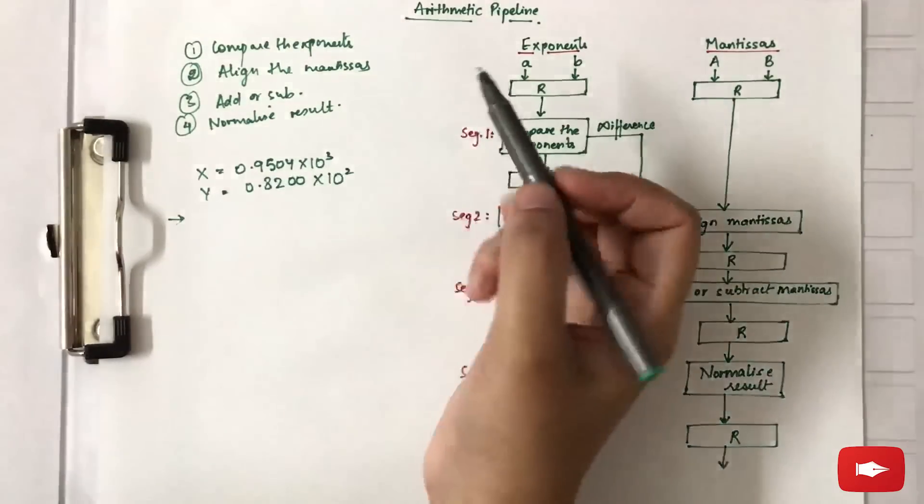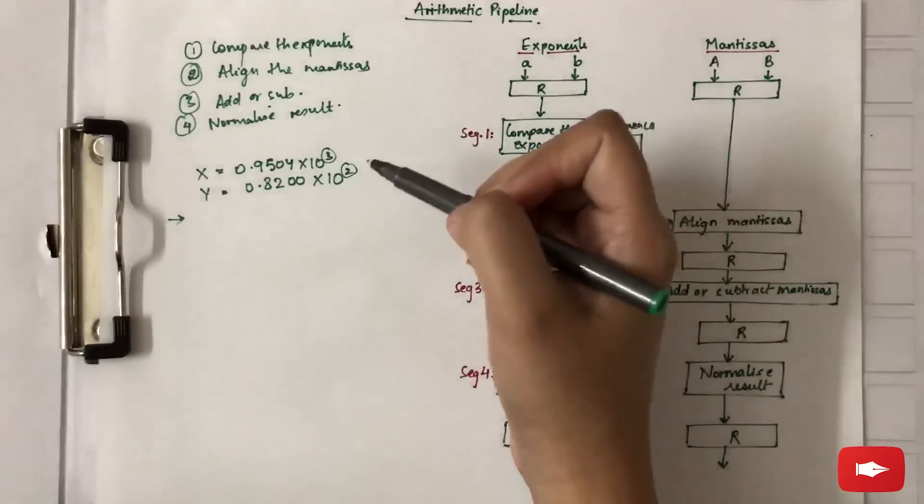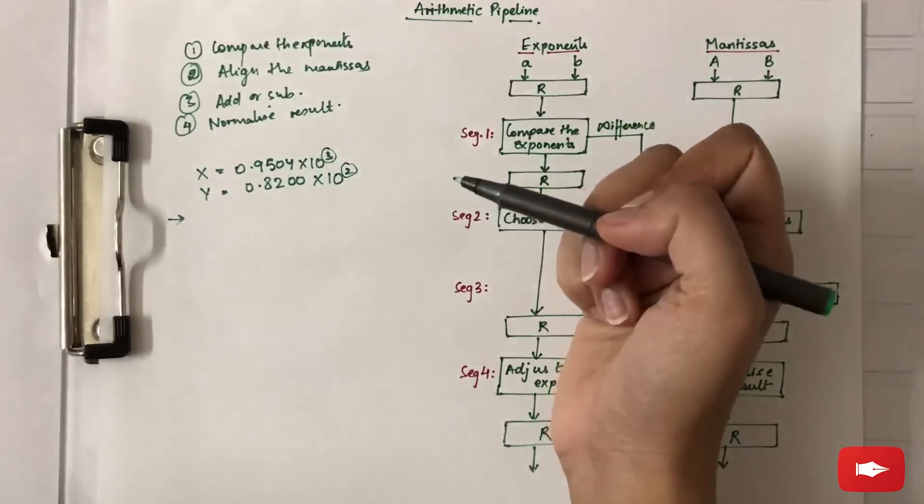First, we compare the exponents, that is 3 and 2. This comparison is done using subtraction. Whatever the result after subtraction will show which one is greater.